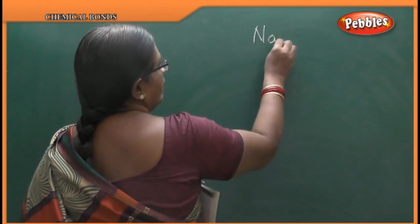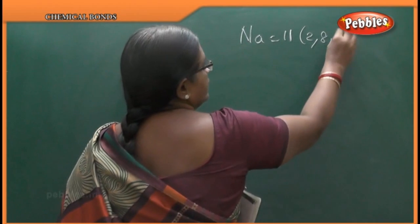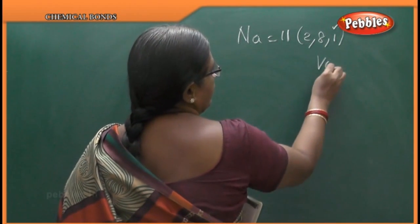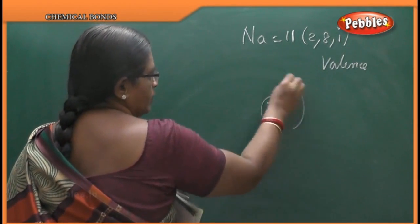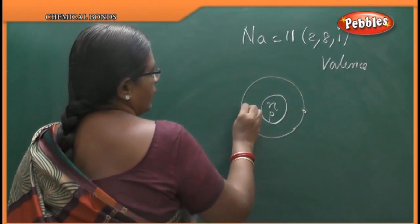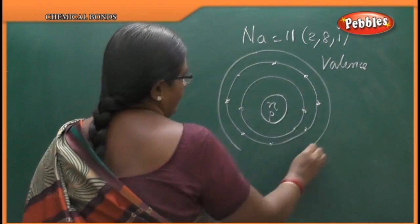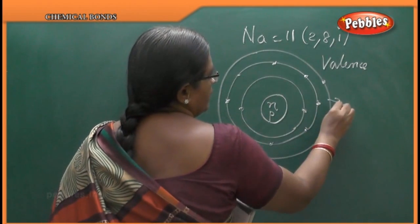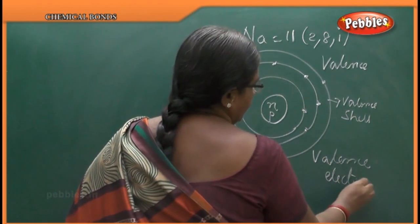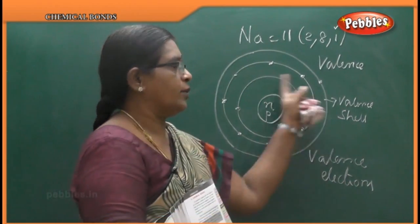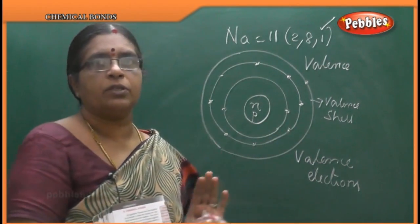Sodium has 11 electrons. The arrangement of electrons is 2, 8, and 1. This 1 electron is called the valence electron, and this is the outermost orbital. This is the nucleus — it contains neutrons and protons. The first shell has 2 electrons, the second shell has 8 electrons, and the third shell has 1 electron. The third shell is called the valence shell, and its electron is called the valence electron. Only these valence electrons take part in bond formation. This is a simple structure of the sodium atom, showing the shells, valence electrons, and the valence shell.